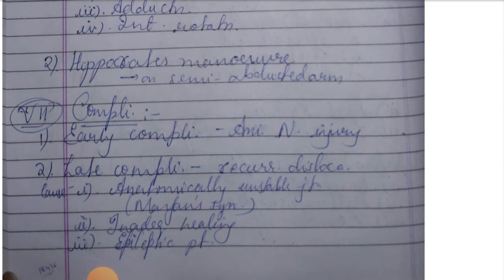Late complications include recurrent dislocation. Causes include: first, an anatomically unstable joint such as in Marfan's syndrome; second, inadequate healing; and third, epileptic patients.